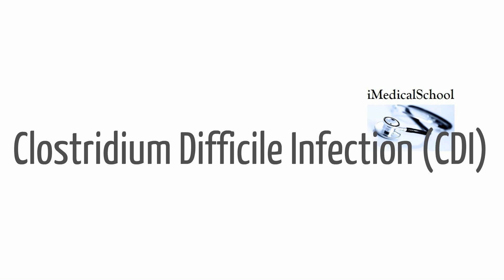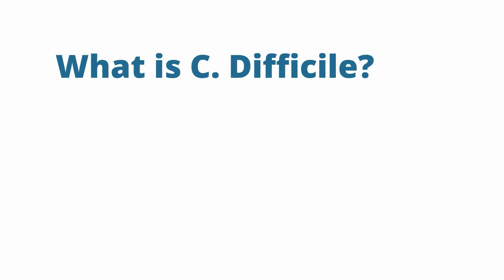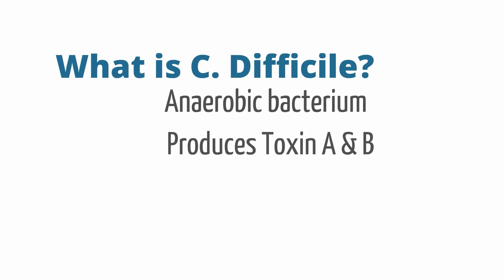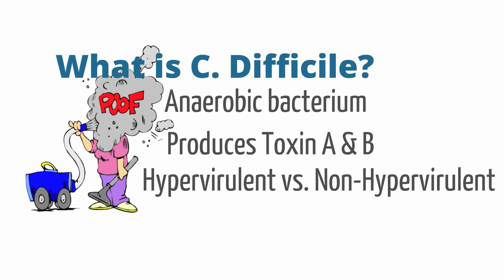Let's begin by understanding what is C. difficile. C. difficile is an anaerobic bacterium that produces toxins which lead to profuse diarrhea. There are different strains of C. difficile, and these include hypervirulent and non-hypervirulent strains. The problem with C. difficile is that if spores form they can contaminate many surfaces and survive on these surfaces for long periods of time. These long-lasting spores then place others at risk.